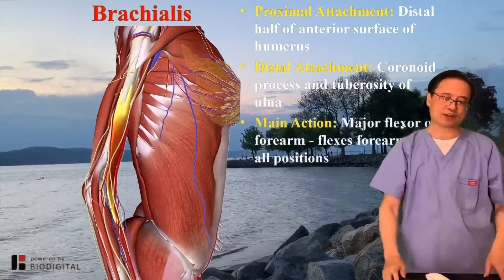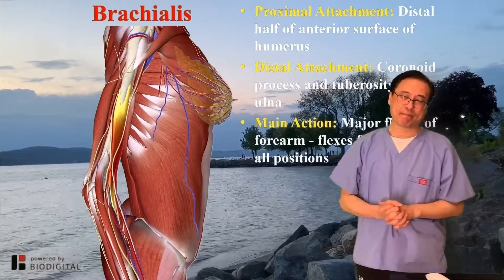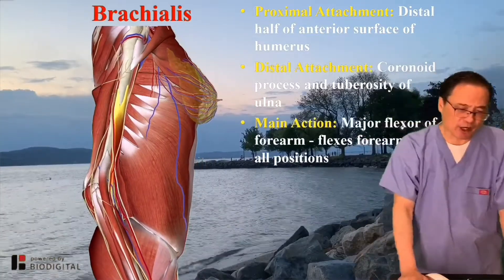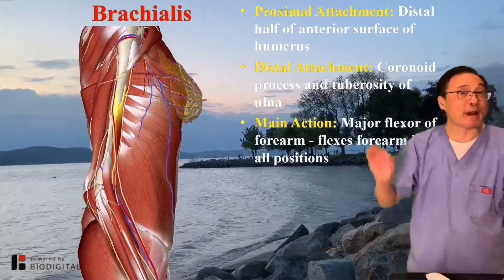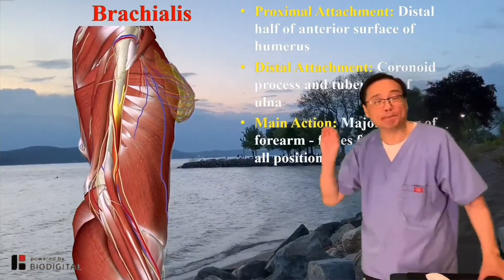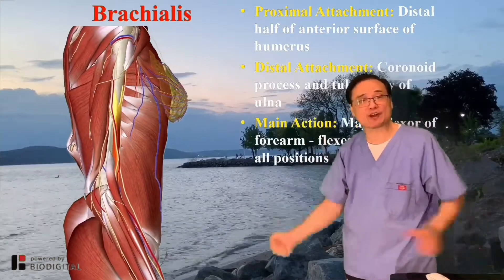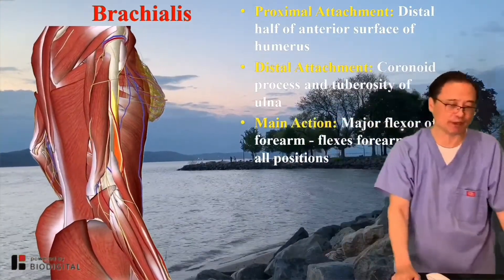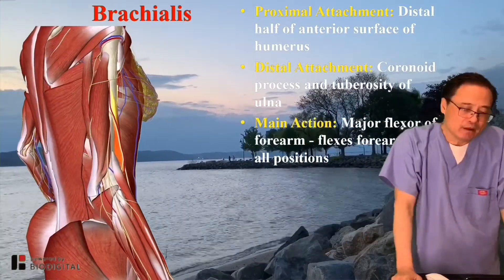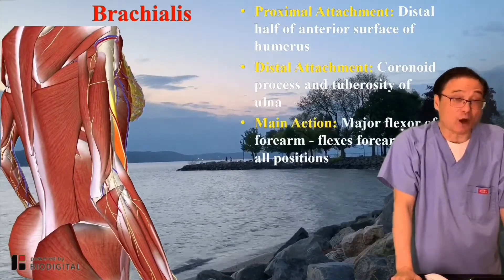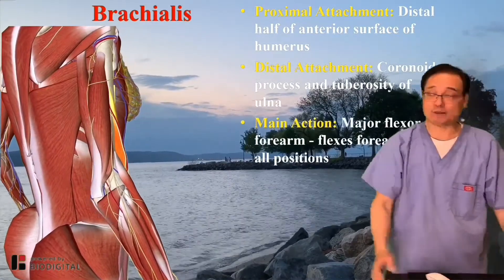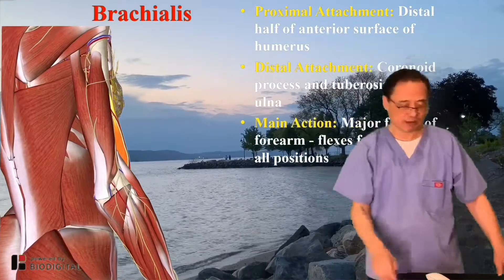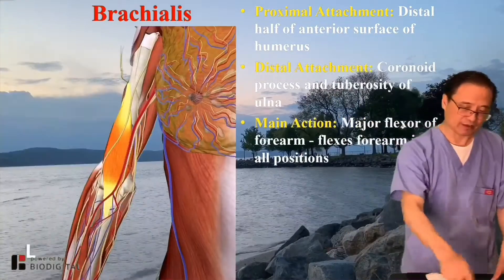The action: brachialis is the major flexor of the forearm. Biceps is not the major one. It flexes the forearm in all positions — that means it doesn't matter which position, it will always activate and flex your arm.